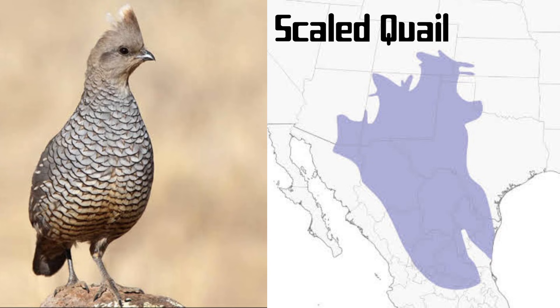Scaled quail are found in the grasslands of the southwestern U.S. and northern Mexico. These brownish-gray birds have a fluffy crest and a beautiful scale-like pattern of dark brown and gray on the breast and belly.